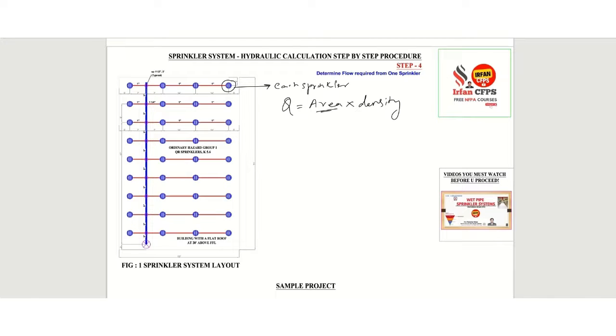We already know the area based on S by L rule, which is about 126 square feet. Density is nothing but the amount of water that falls into each square foot in one minute, and the units will be gallons per minute per square foot.